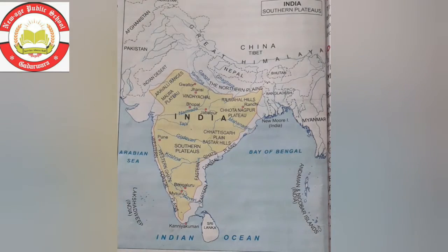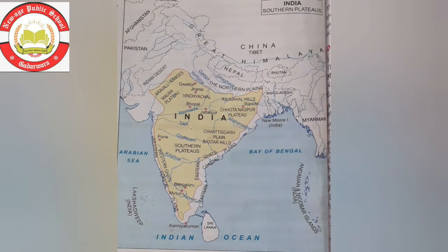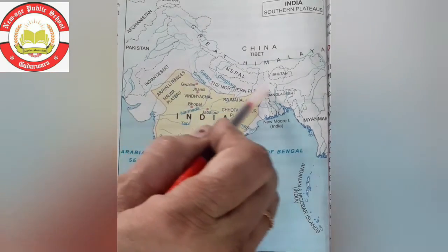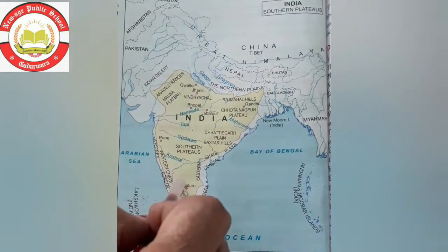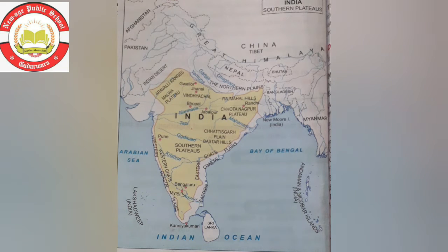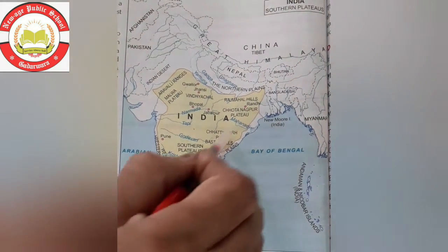The Southern Plateau. What do you mean by plateau? The plateau is a highland which is almost flat at the top. The southern plateau lies to the south of the Northern Plain. Look at the map in your book — this is shown in yellow color. The area is cone-shaped.